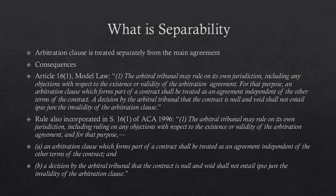This has also been incorporated in Section 16.1 of the 1996 Act, which reads: 'The arbitral tribunal may rule on its own jurisdiction, including ruling on any objections with respect to the existence or validity of the arbitration agreement, and for that purpose, an arbitration clause which forms part of a contract shall be treated as an agreement independent of the other terms of the contract, and a decision by the arbitral tribunal that the contract is null and void shall not ipso jure invalidate the arbitration clause.'